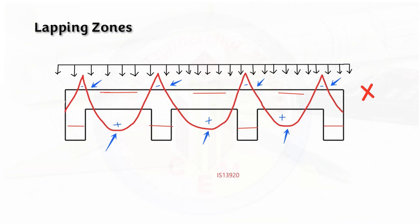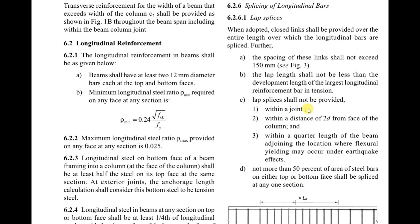So IS 13920 specifies some criteria for lapping zones. Let us have a quick look into that. The lap splices shall not be provided within the joint (this is the column-beam junction), within a distance of 2d from the face of column, and within quarter length of beam. Not more than 50% of area of steel bars on either top or bottom face shall be spliced at any one section. So we have to follow these conditions when we consider lateral loads.